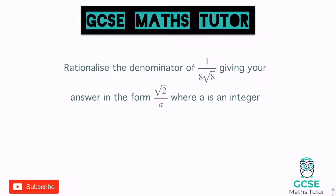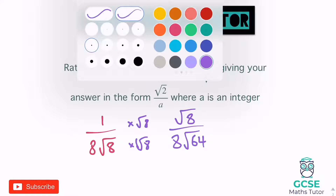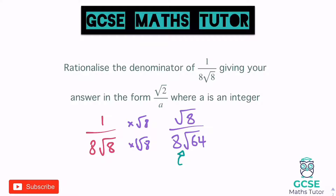Last question here before you have a go: rationalise the denominator of one over eight root eight, giving your answer in the form root two over A, where A is an integer. Let's write this out — one over eight root eight — and apply the same logic. Times the top and bottom by root eight. On the top, one times root eight is root eight. On the bottom, eight root eight times root eight: one times eight is eight, and root eight times root eight is root sixty-four, which is eight. So eight times eight gives us sixty-four on the bottom.